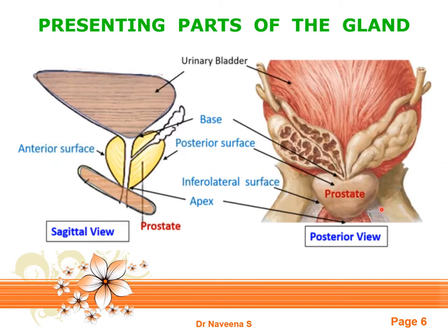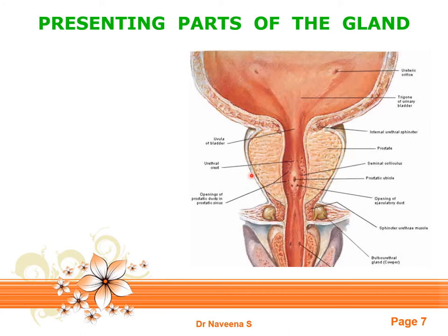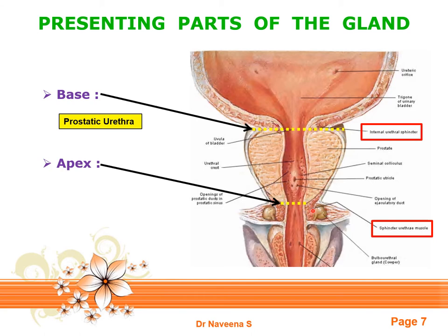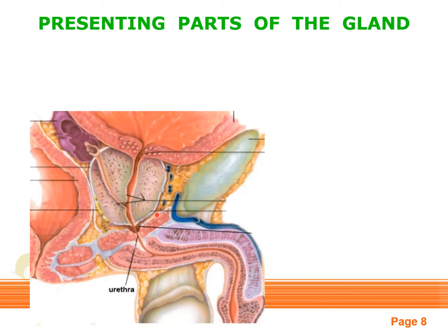The base of the prostate gland is pierced by the prostatic part of the urethra. It is also related to the internal urethral sphincter, which is formed by the detrusor muscle of the urinary bladder. The apex of the gland is related to the sphincter urethrae, which is part of the urogenital diaphragm, along with the bulbourethral glands on either side of the sphincter. The anterior surface is related to the prostatic plexus of veins, which receives the deep dorsal vein of the penis.